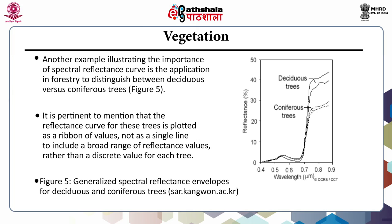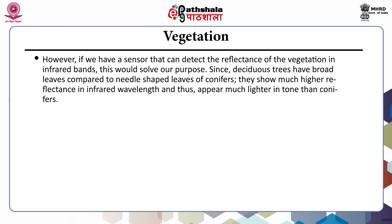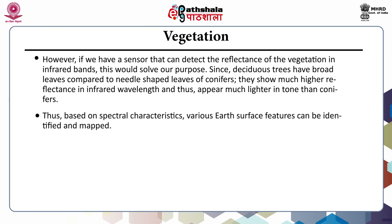We can see this in the image on the left side. It is pertinent to mention that the reflectance curve for these trees is plotted as a range of values, not as a single line, to include a broad range of reflectance values rather than a discrete value for each tree. However, if we have a sensor that can detect the reflectance of vegetation in infrared bands, this would solve our purpose. Since deciduous trees have broad leaves compared to the needle-shaped leaves of conifers, they show much higher reflectance in infrared wavelengths and thus appear much lighter in tone than conifers. Based on spectral characteristics, various earth surface features can be identified and mapped.